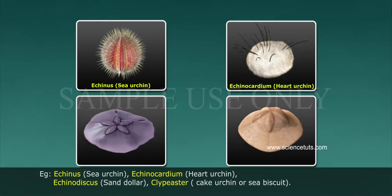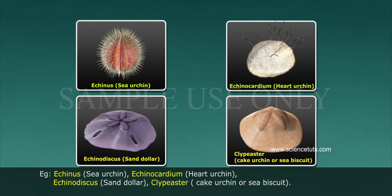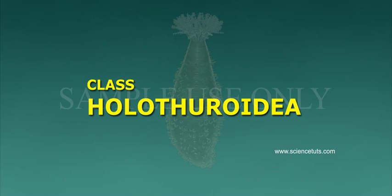Examples of Echinoidea: Echinus, the sea urchin; Echinocardium, the heart urchin; Echinodiscus, the sand dollar; Clypeaster, the cake urchin or sea biscuit.